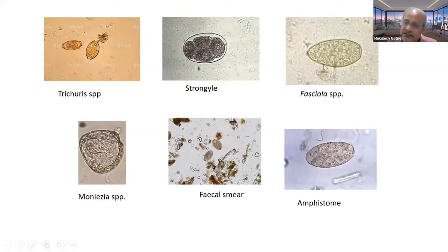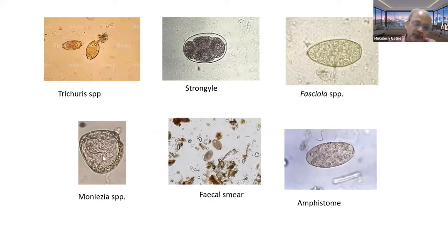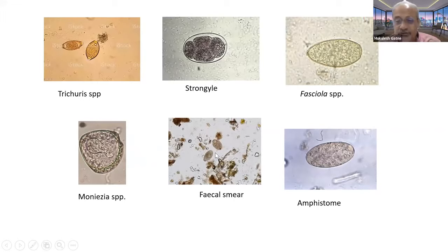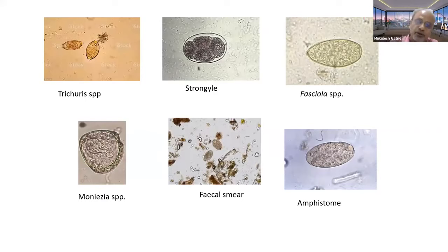Fasciola eggs are yellowish in color with an operculum. If eggs are whitish but same size and shape, these are amphistomes. Moniezia eggs are roughly triangular with a triangular structure inside known as the pyriform apparatus. The fecal smear should be thin when you look inside the microscope — if it is very thick, it is very difficult to identify the eggs.